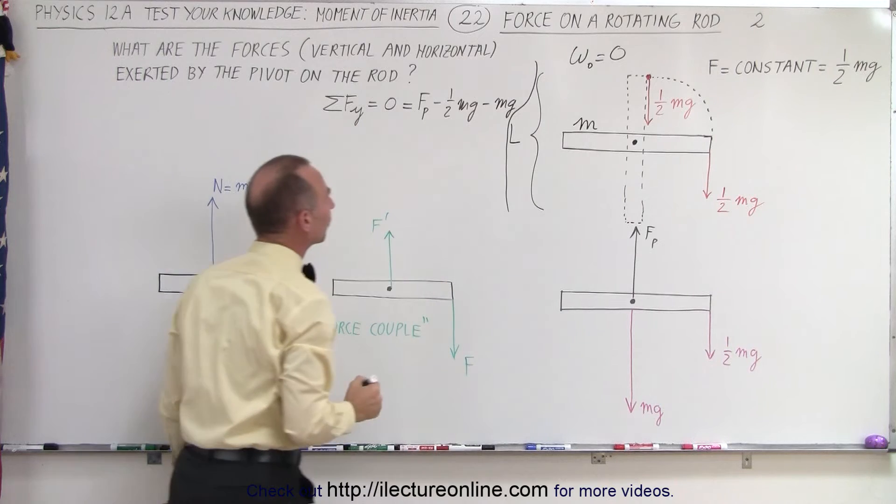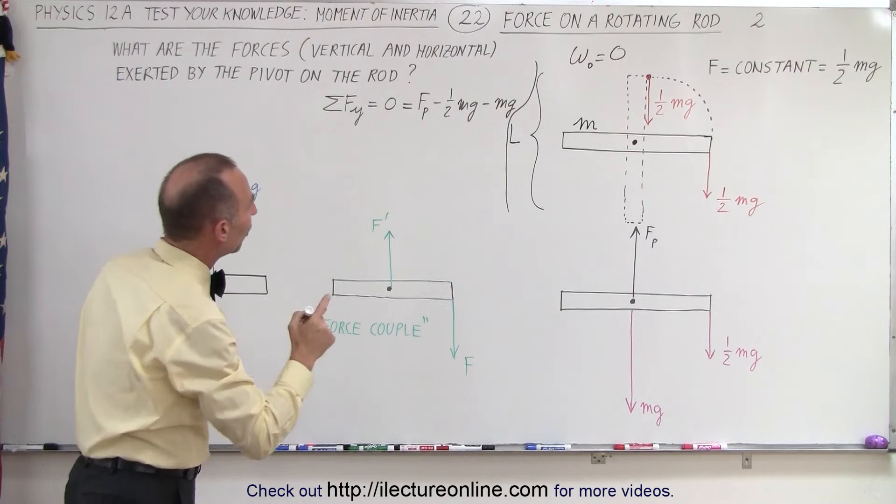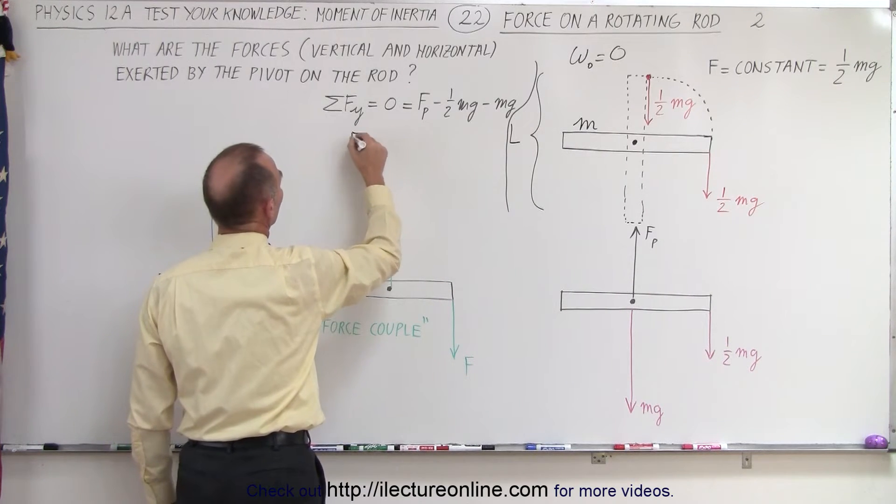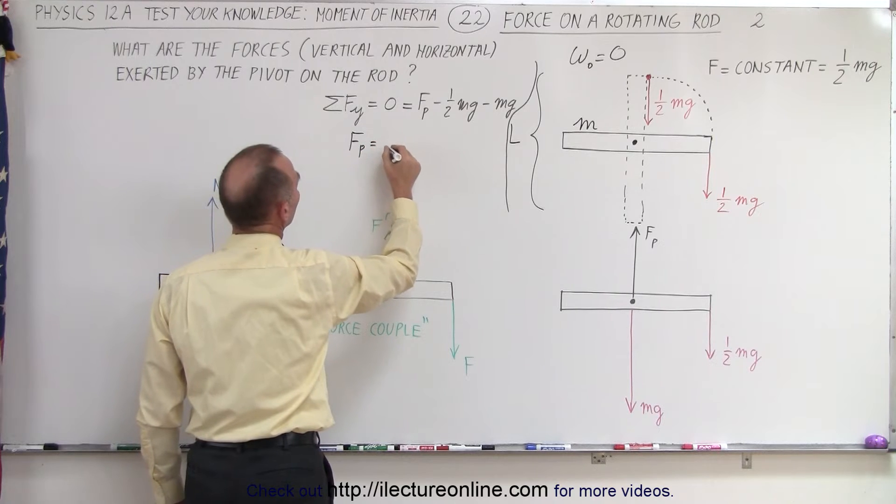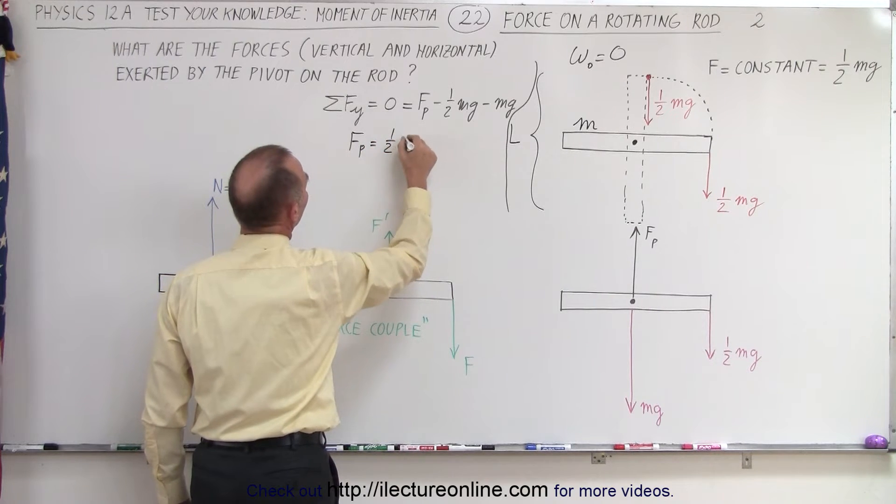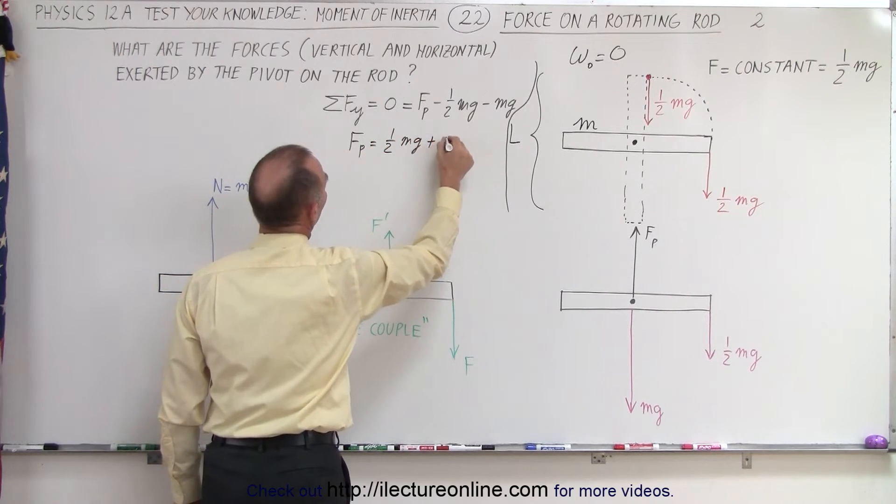Let's go ahead and do that so we don't confuse anything. And so solving for the force of the pivot, force on the pivot, is equal to, that would be one-half mg plus mg.